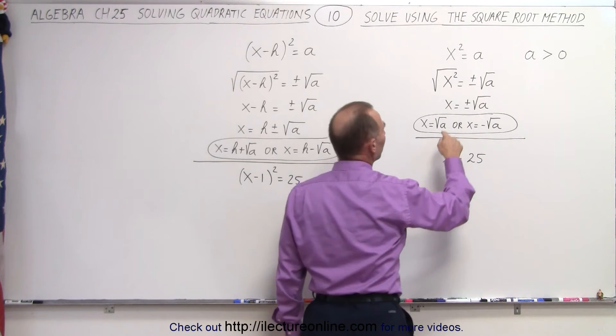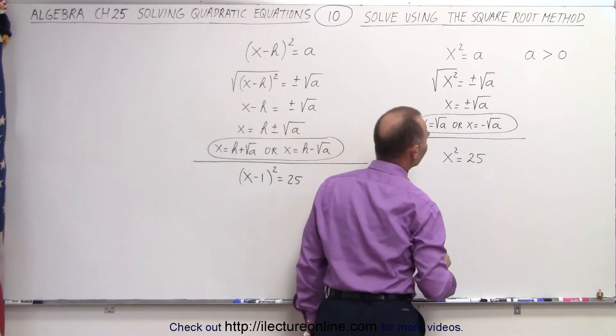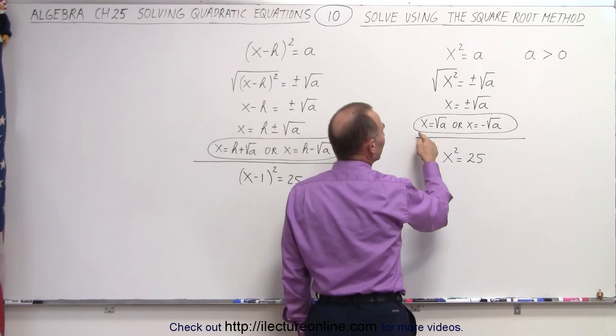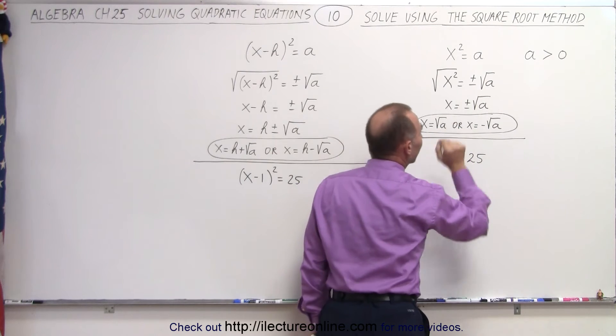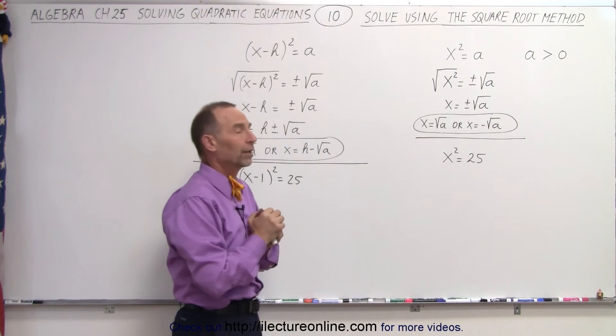And so we then end up with √x² = ±√a on the right side, which simply means that x equals the square root of a or x equals the negative square root of a. Both solutions will satisfy that quadratic equation.